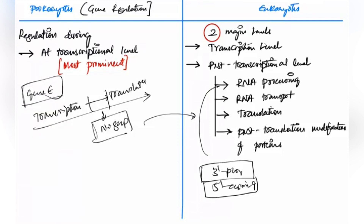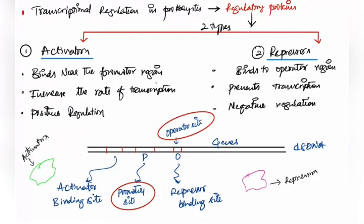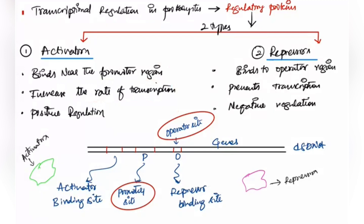This is the basic difference in gene regulation between prokaryotes and eukaryotes. In prokaryotes, transcriptional regulation is mainly carried out by regulatory proteins of two different types: activators and repressors. Activators bind to the promoter region and increase the rate of transcription.